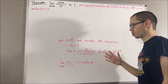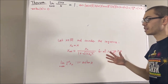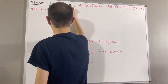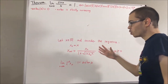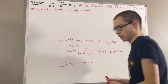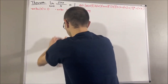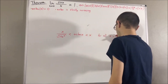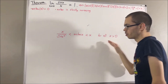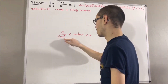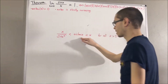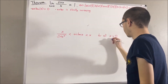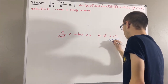Some properties of the arctangent function we have proven: arctangent is a strictly increasing function. We have also proven the following inequalities. If x is any positive real number, then x over the square root of 1 + x² is less than arctangent of x, which is less than x. And if x < 0, the inequalities are reversed.